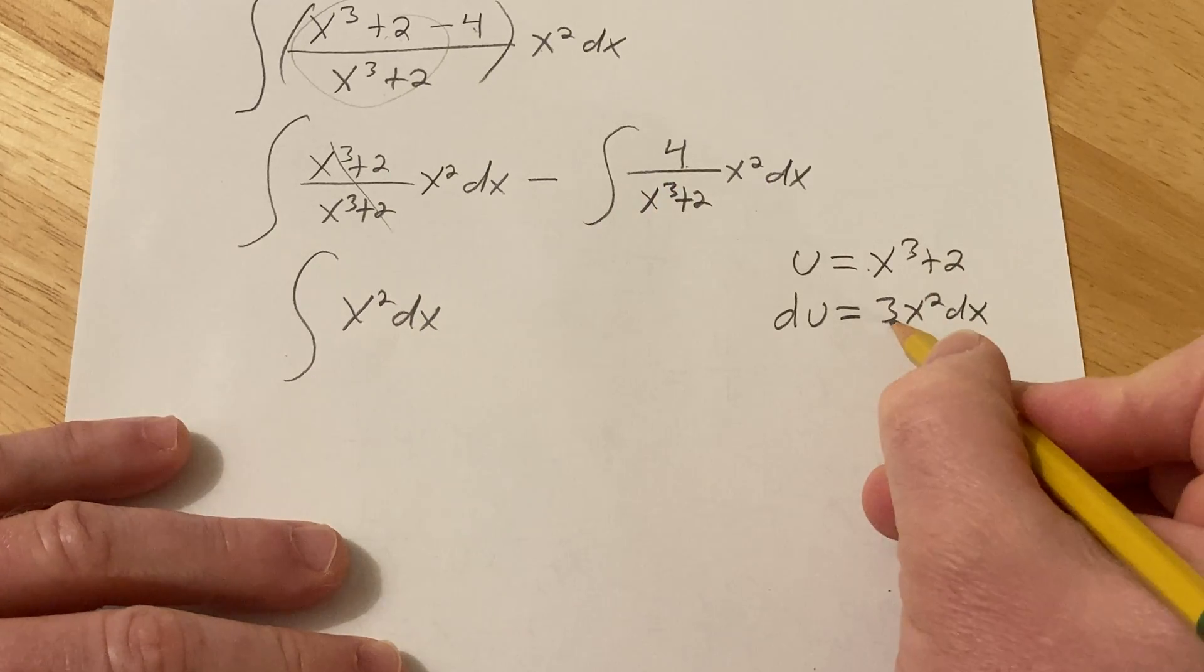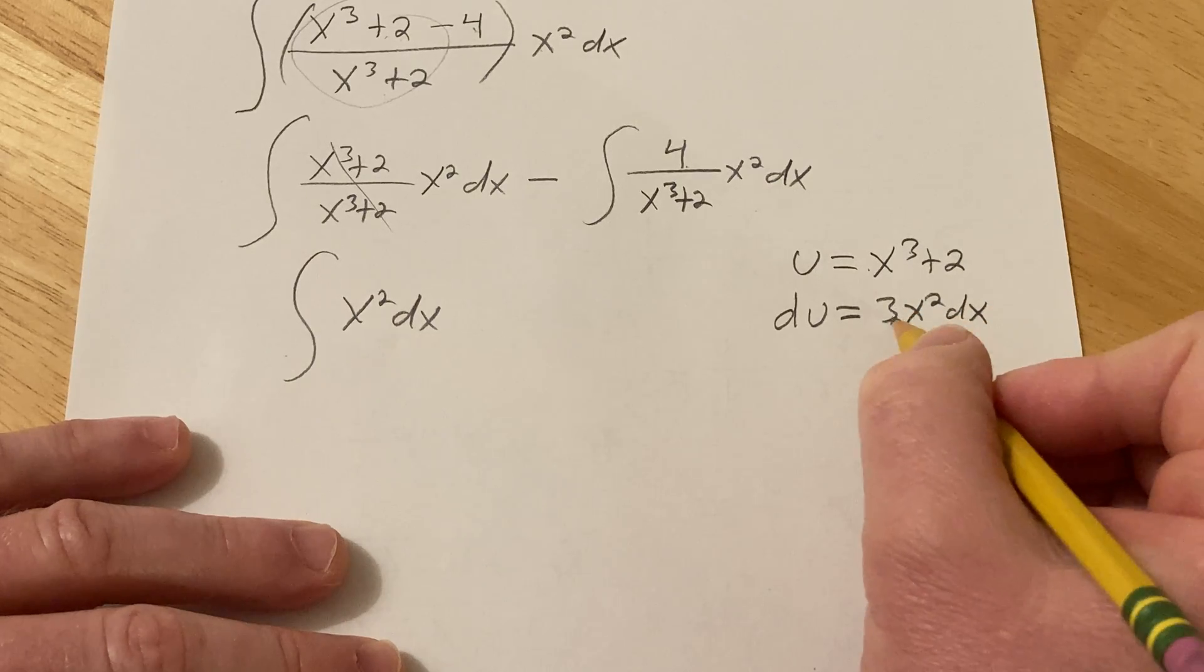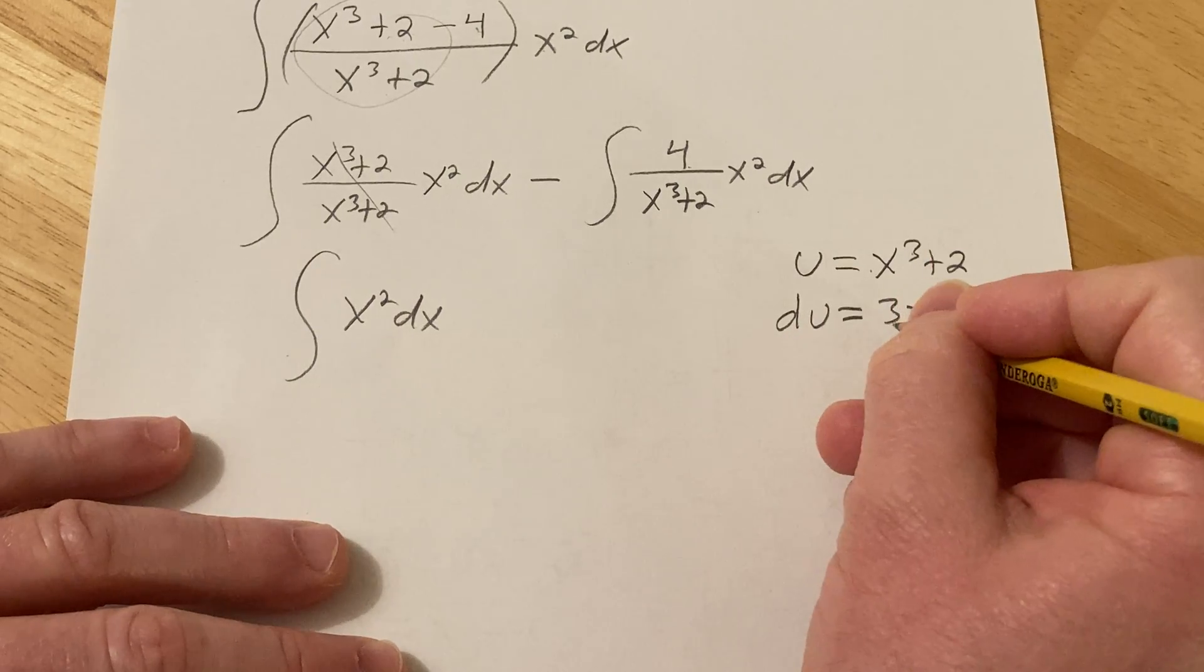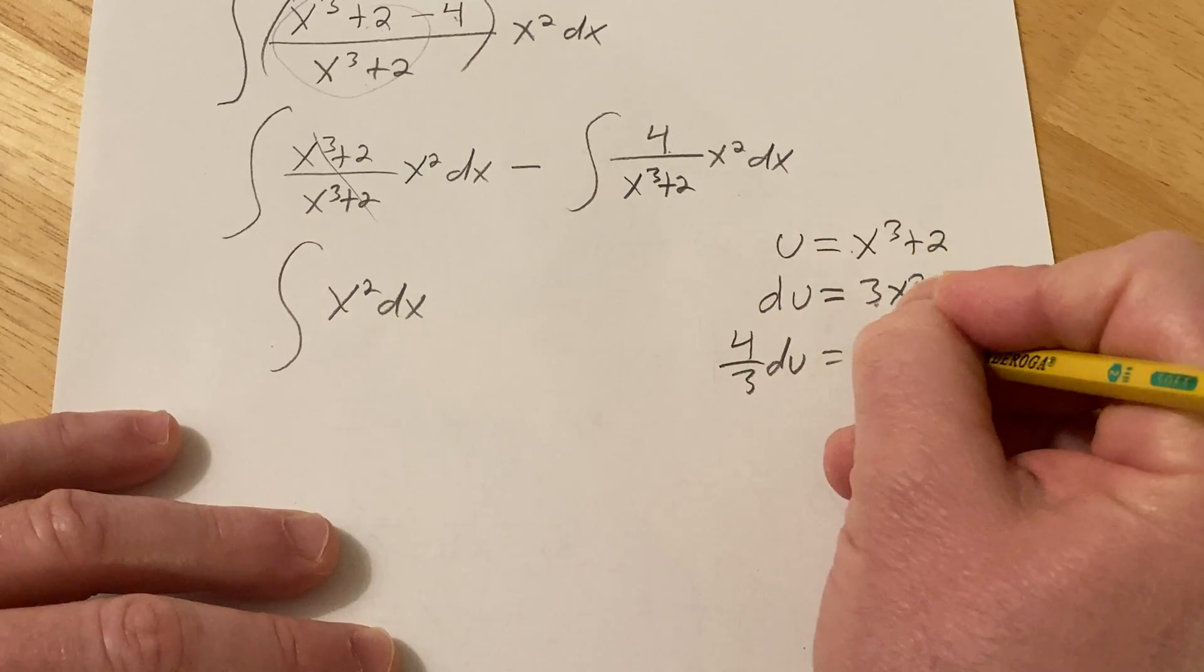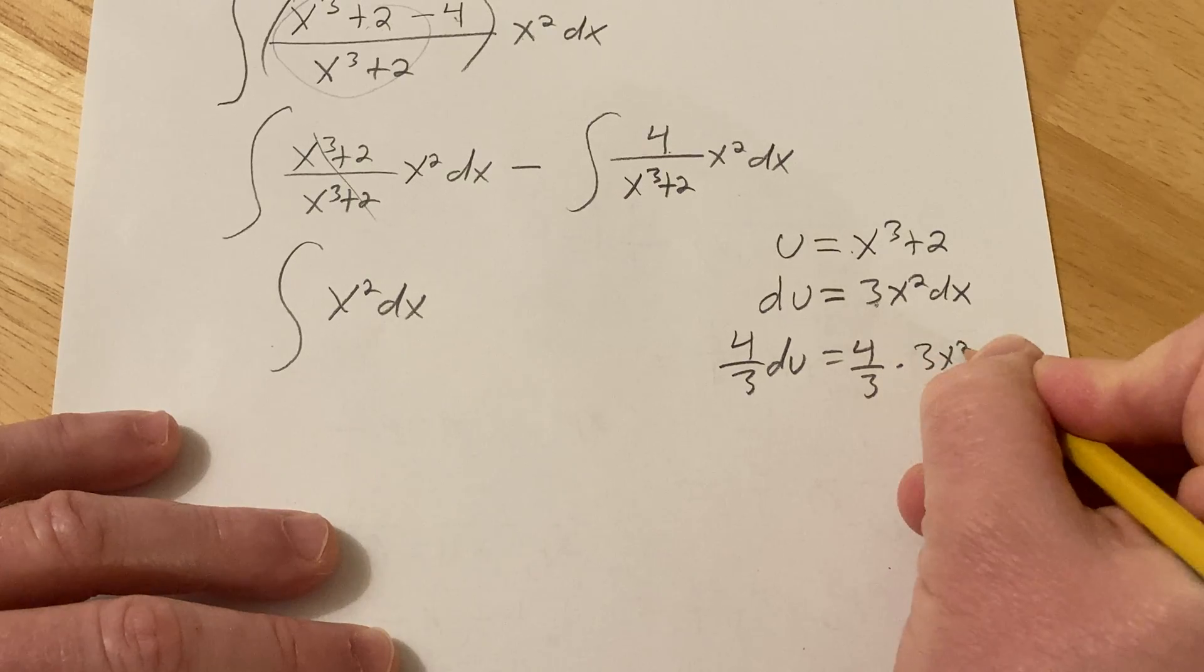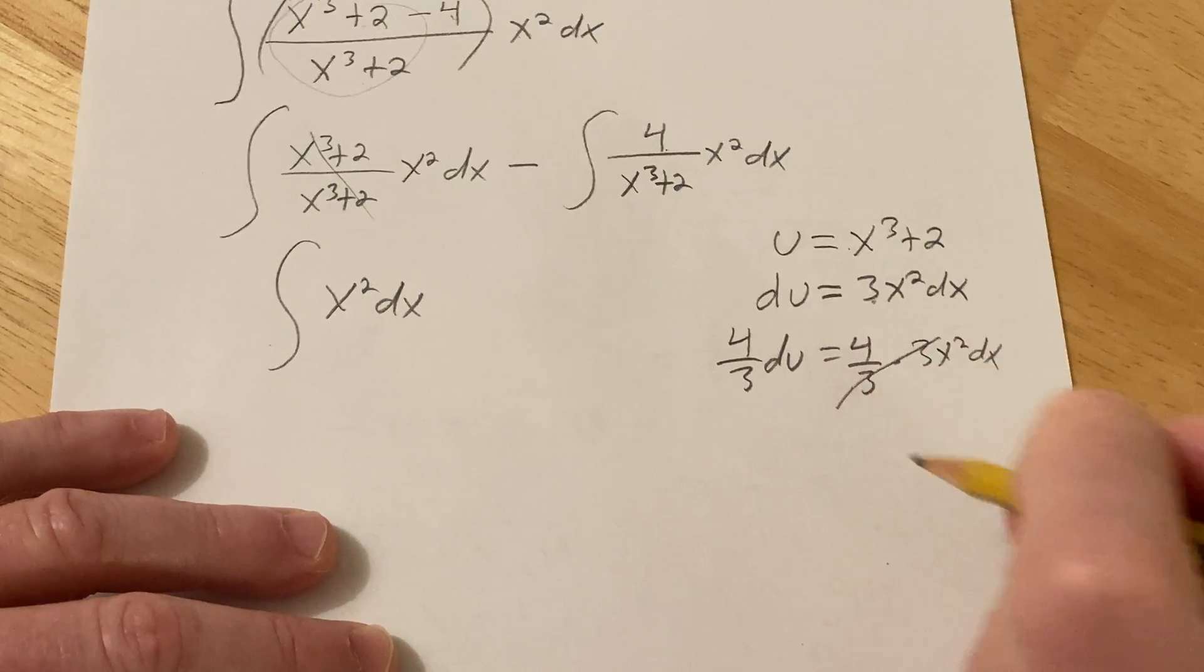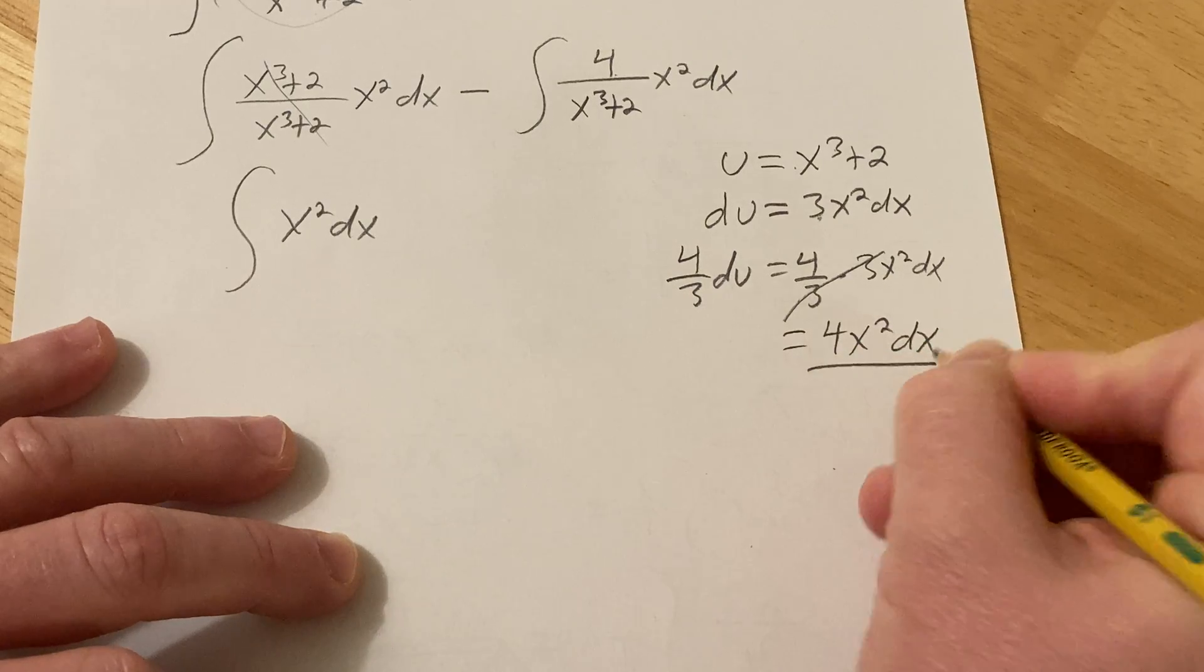We have a 4 here and here we have the 3. So what you do now is basically you have to make this a 4 and you have to get rid of the 3. You can do that in one move by doing this: 4 thirds du, 4 thirds and then we have the 3x squared dx. Basically you multiply both sides by 4 thirds and that gives you what you want, right?